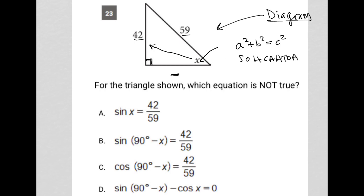I'd have the opposite side and the hypotenuse, which means I'd use sine. So the sine of X would equal opposite 42 over hypotenuse 59.